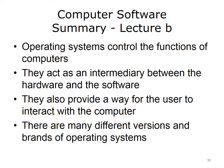This concludes Lecture B of the Unit on Computer Software. In summary, this lecture defined what an operating system is and delved into what operating systems do. Operating systems control all the functions of the computer and act as an intermediary between the hardware and the software. They also provide a way for the user to interact with the computer. There are many different versions and brands of operating systems, and each OS is unique to a particular computer hardware system.